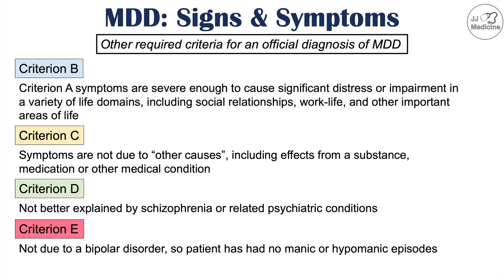Finally, Criterion E must be met, meaning the signs and symptoms are not due to bipolar disorder. Patients with bipolar disorder, either type 1 or type 2, can have these signs and symptoms in their depressed state, but they also have manic or hypomanic episodes. For Criterion E to be met, the patient should not have had manic or hypomanic episodes in the past — if they have, the diagnosis would be bipolar disorder. An official diagnosis of major depressive disorder requires all these criteria to be met.